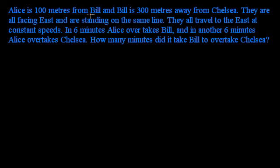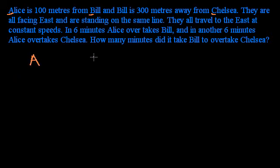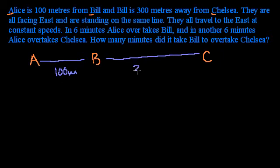So what does it say? It says Alice is 100 meters from Bill, and Bill is 300 meters away from Chelsea. So let's draw that out. He drew a little diagram, so we know Chelsea is to the right of Bill. You have Alice, then 100 meters away you have Bill, and then 300 meters to the right of that you have Chelsea. This distance is 100 meters and this distance is 300 meters.